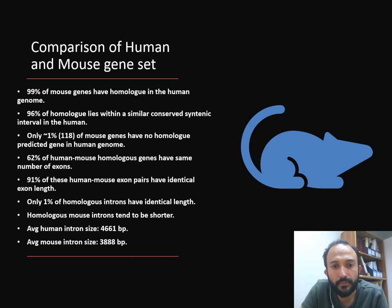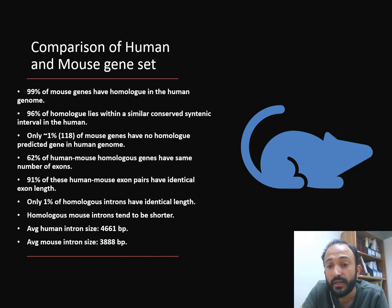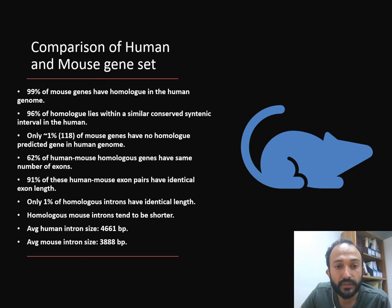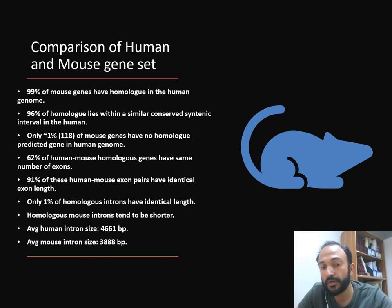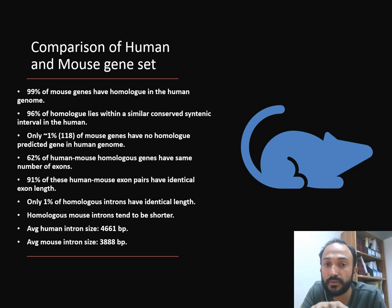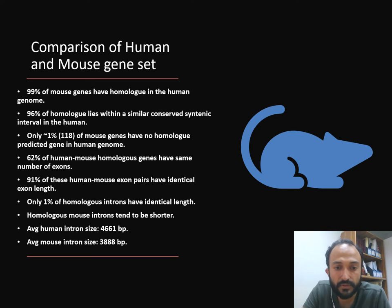In summary, comparing human and mouse gene sets after sequencing both genomes: 99% of mouse genes have a homolog in the human genome. Of those, 96% of homologs lie within a conserved syntenic interval in the human genome — meaning they are also in the same syntenic order. Only 1%, which is 118 mouse genes, have no predicted homolog in the human genome. These may be novel genes specific to mouse, or possibly deleted in human — there are many avenues to investigate.